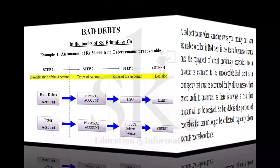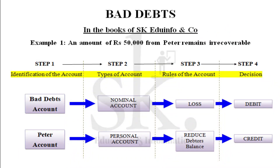Let's understand bad debts and journal entries with reference to certain examples. Example one states: an amount of rupees 50,000 from Peter remains irrecoverable, which means you are not going to recover the amount of rupees 50,000 from Peter. Previously Peter stood as a debtor because he was supposed to pay you 50,000. In the books of SK Aduinfo and Co., we are supposed to receive rupees 50,000 from Peter but as on date the amount stands irrecoverable, so we identify this as bad debt.